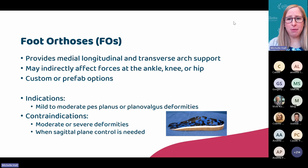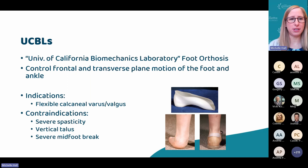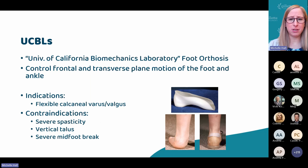Foot orthoses can be prefabricated or custom molded. They provide medial longitudinal and possibly transverse arch support. They may have impacts at the knee and ankle positioning, very rarely at the hip. These are going to be those kids with mild or moderate pes planus or planovalgus deformities. Anything more support needed, or if you need sagittal talocrural joint control, then we're probably going to need to go with a different device because this won't help at the ankle as far as sagittal plane movement. UCBLs — named after the University of California Biomechanics Laboratory — are very similar to foot orthoses, but they grab a little bit more around the heel and thereby provide coronal plane control of the foot and ankle complex.